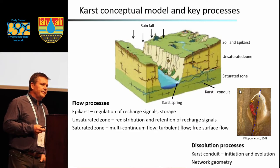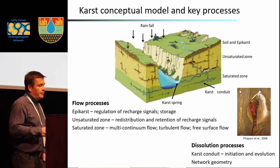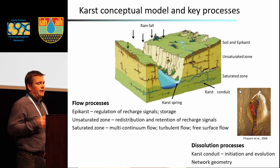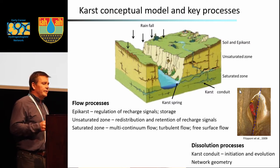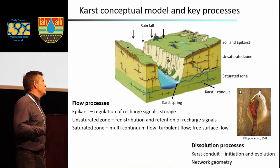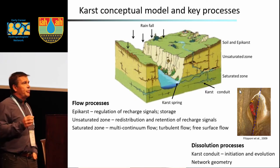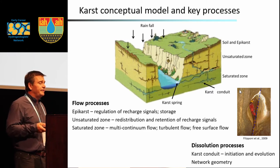There is a classical conceptual model of karst. Generally we can consider that there is a soil and epikarst compartment, an unsaturated zone, and a saturated zone. Within each of these compartments you have conduits, fractures, and matrix, and each of these compartments has very important impact on the flow processes.